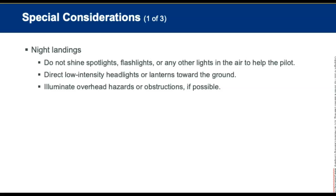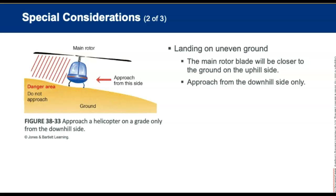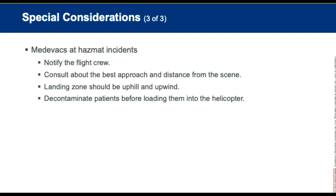Special helicopter considerations: for night landings, do not shine spotlights, flashlights, or any lights into the air toward the pilot as they may be temporarily blinded. Direct low-intensity headlights or lanterns toward the ground at the landing site and illuminate overhead hazards if possible. If a helicopter must land on uneven ground, use extra caution — the main rotor blade will be closer to the ground on the uphill side, so approach from the downhill side only. For medvac at hazmat incidents, immediately notify the flight crew of the hazardous material presence, consult the incident commander about approach and distance, position the landing zone uphill and upwind from the hazmat scene, and properly decontaminate patients before loading them.